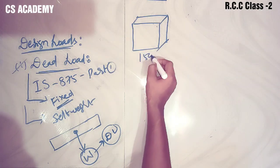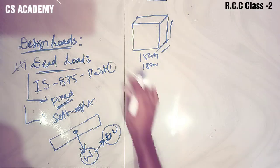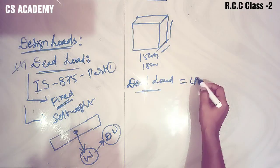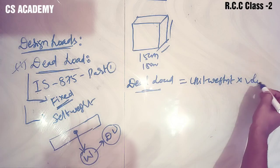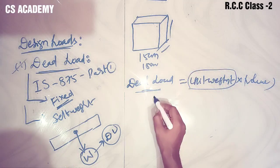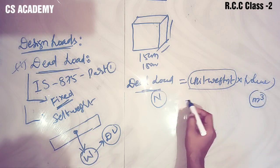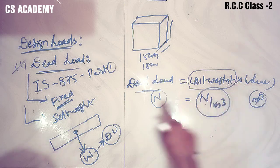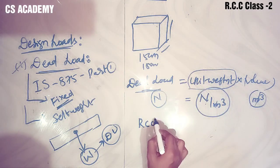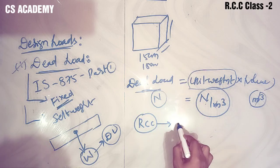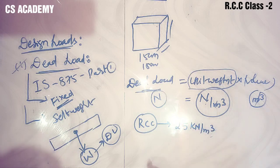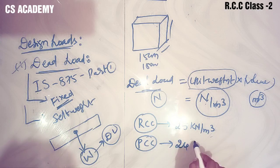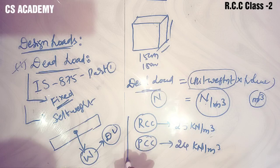For example, a slab of 150mm thickness - dead load is calculated as unit weight multiplied by volume. Unit weight multiplied by value gives us the load in Newtons or kN. For reinforced cement concrete (RCC), the unit weight is 25 kN per meter cube.